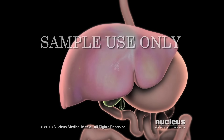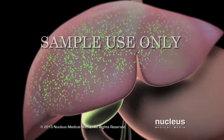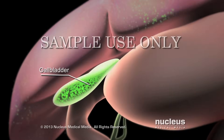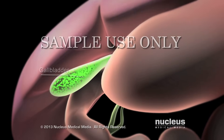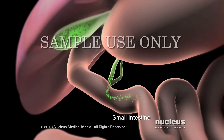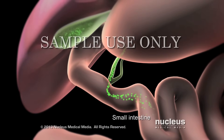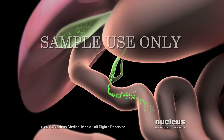Your liver also makes a substance called bile. Your gallbladder stores bile and releases it into your small intestine to help digest fats in the food you eat.